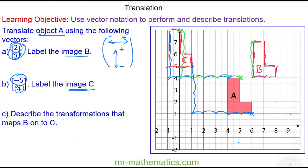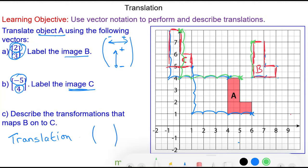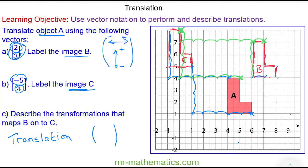For the next question we're going to describe a transformation that maps B onto C. The first thing to mention is that it is a translation, and then we need to find the vector. I'll pick a vertex on B and match it to the corresponding vertex on C. The horizontal movement is to the left by 7, so that is negative 7, and 1 up.